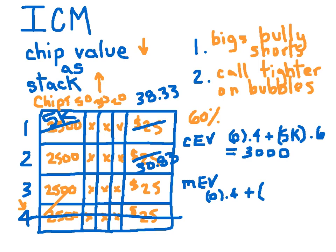Our chip stack when we win will be $38.33, and that's going to happen 60% of the time. So our MEV in the long run is $23.